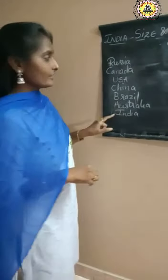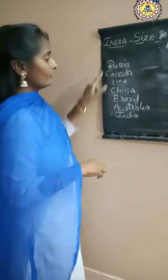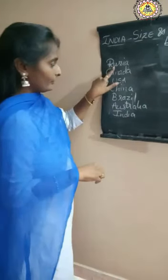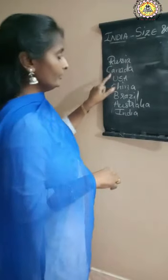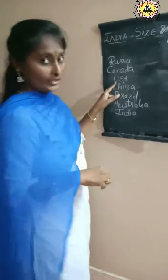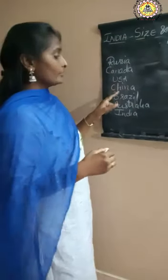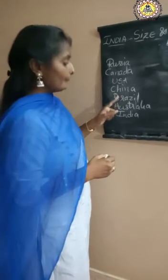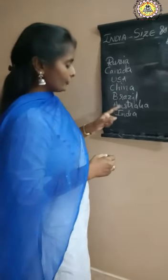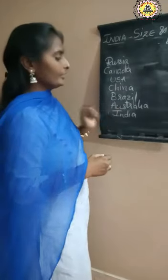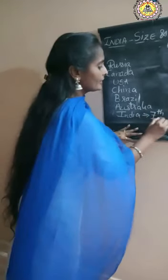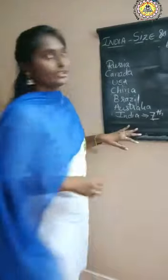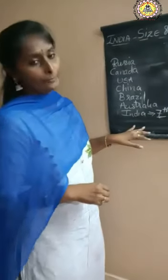What are the 6 largest countries in the world? Russia, Canada, USA, China, Brazil, Australia — and India stands in 7th position in terms of area.